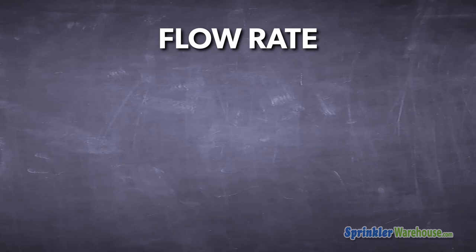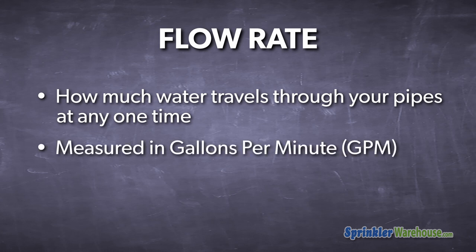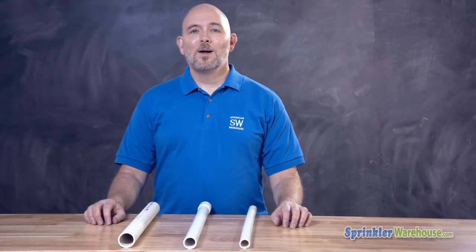There are also pressure regulating valves and pressure regulating sprinkler heads. Flow rate is how much water travels through your pipes at any one time. It's measured in GPM — that's gallons per minute. Your flow rate indicates how much water is available to your sprinkler system.